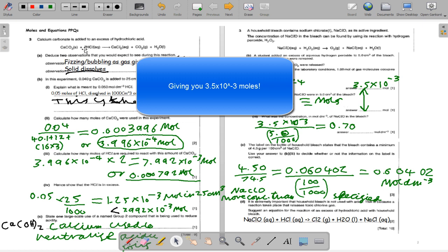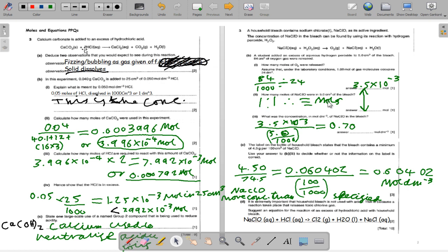Having a ratio of 1 to 1 now, the moles of NaClO in 5 centimeters cubed of the bleach is identical because the ratio is 1 to 1. So it's 3.5 times 10 to the minus 3 moles. The concentration in moles per decimeters cubed of NaClO in the bleach is 3.5 times 10 to the minus 3, all over 5 over 1000, and that is 0.7 moles per decimeter cubed.